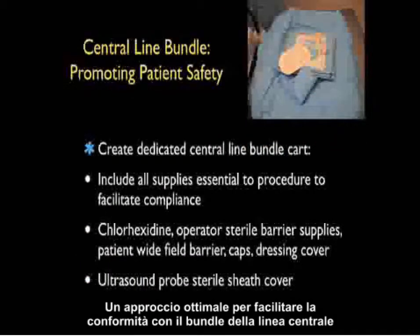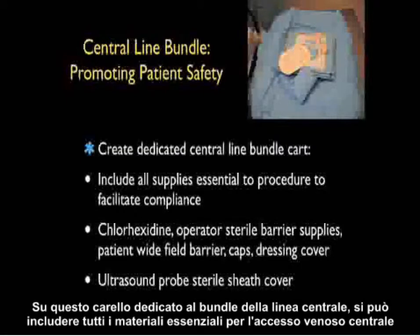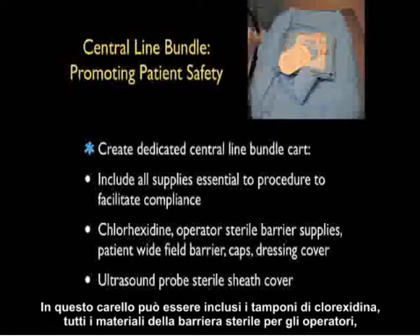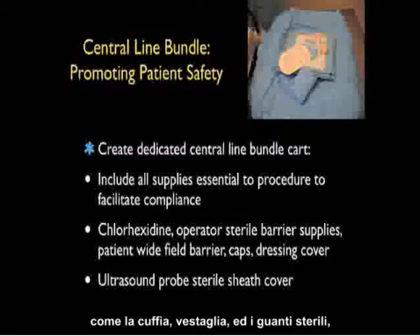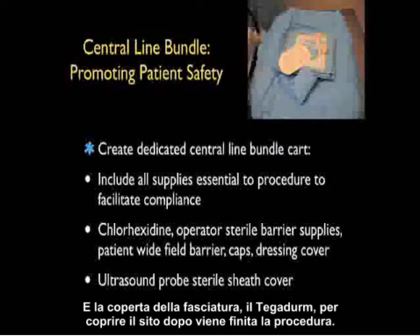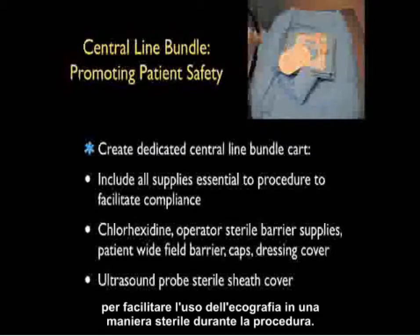An optimal approach to facilitate compliance with the central line bundle is to create a dedicated central line bundle cart that moves to the patient during the procedure. This cart can include all supplies essential to central venous access: chlorhexidine swabs, sterile barrier supplies for the operator such as cap, gown, and sterile gloves, the wide field barrier for the patient, sterile caps for the catheter, the Tegaderm dressing, and the ultrasound probe sterile sheath cover to facilitate sterile use of ultrasound during the procedure.